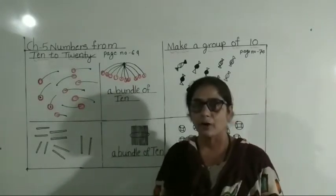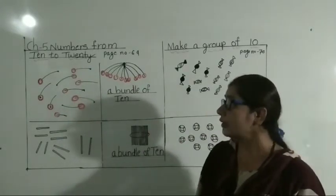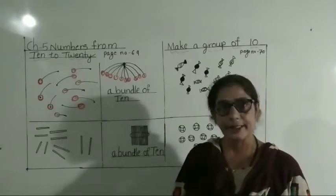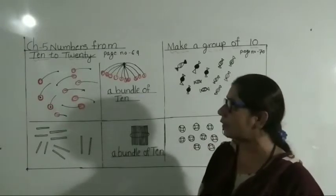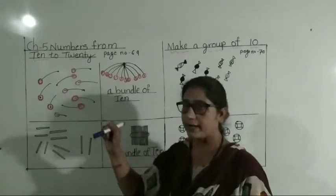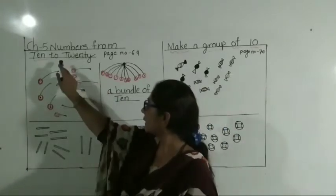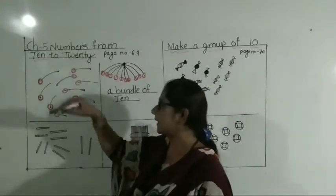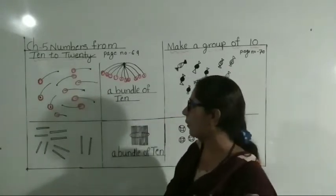Students, 1 to 9 is already completed. Now we move to 10 to 20. T-E-N: 10. T-W-E-N-T-Y: 20.